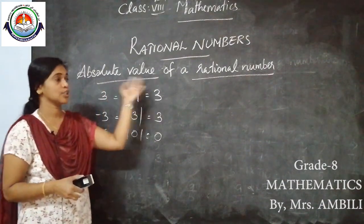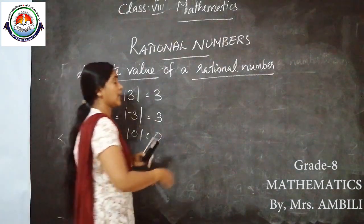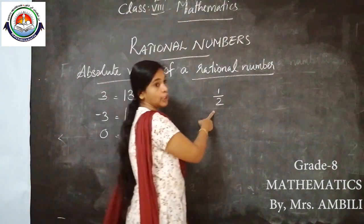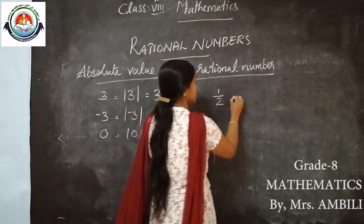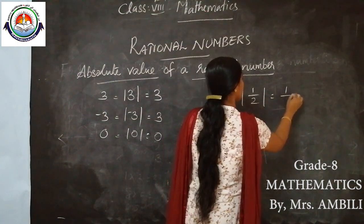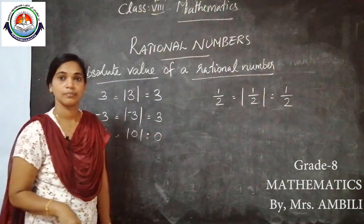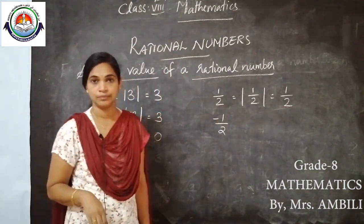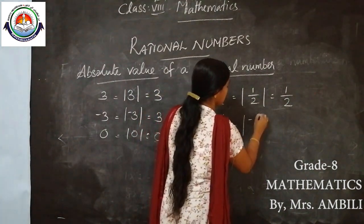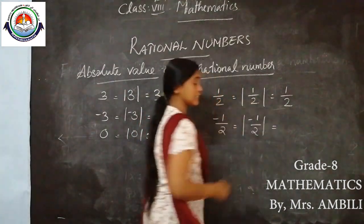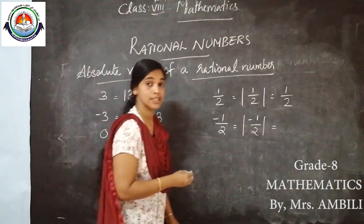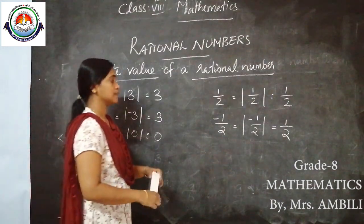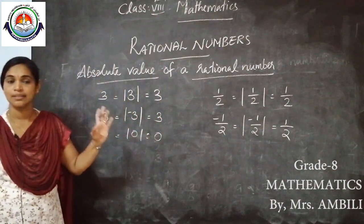Now let us extend this to rational numbers. The absolute value of 1/2: |1/2| = 1/2, without sign. The absolute value of −1/2: |−1/2| = 1/2, without sign. And the absolute value of 0 is 0.